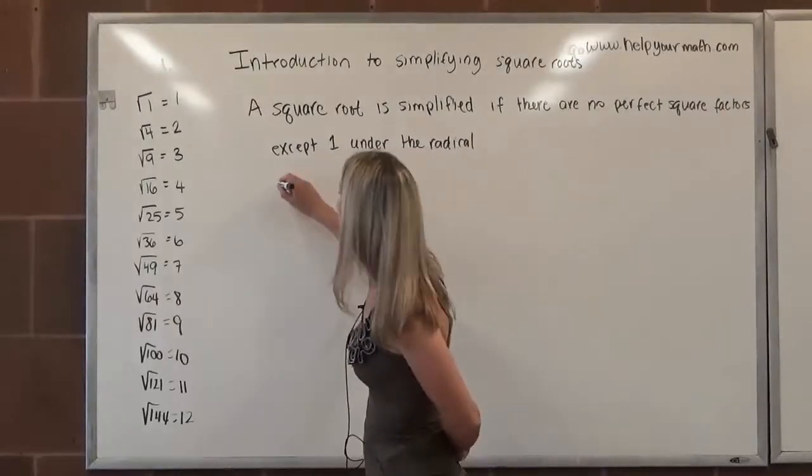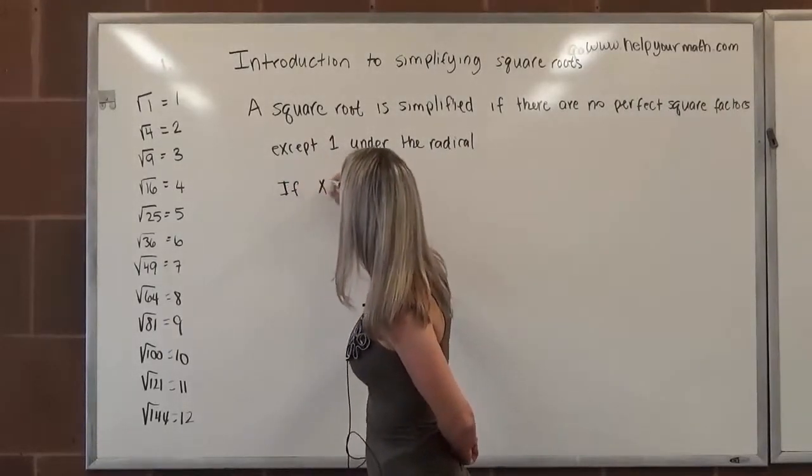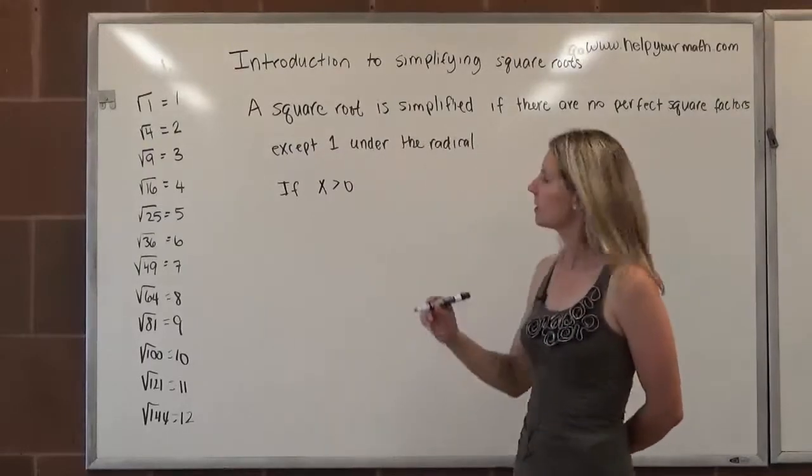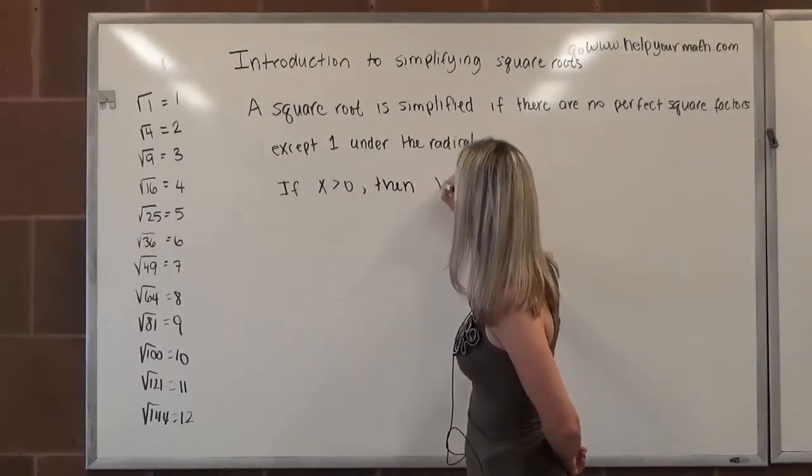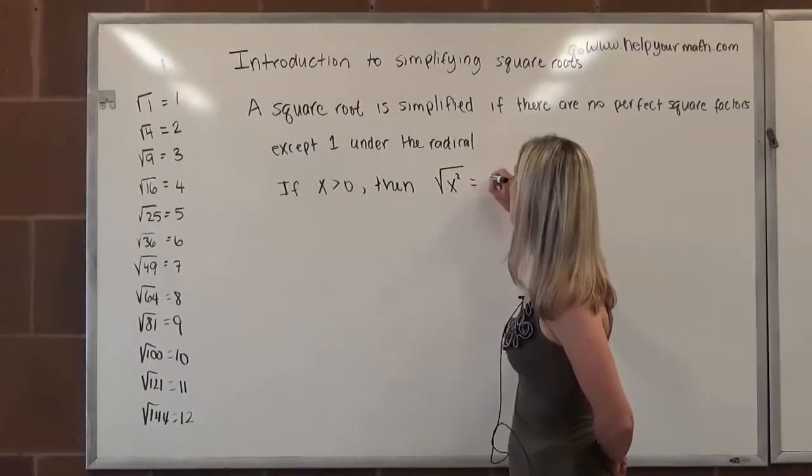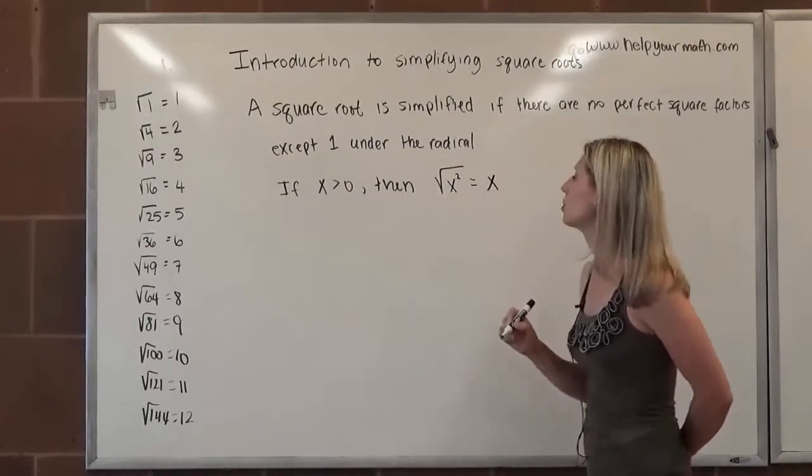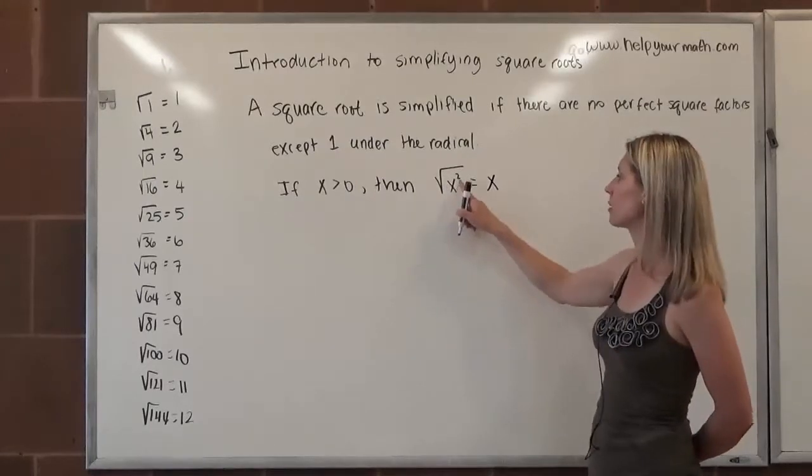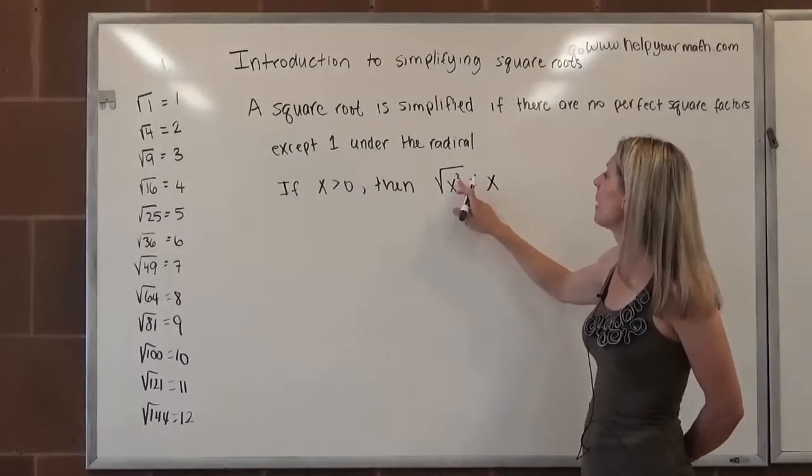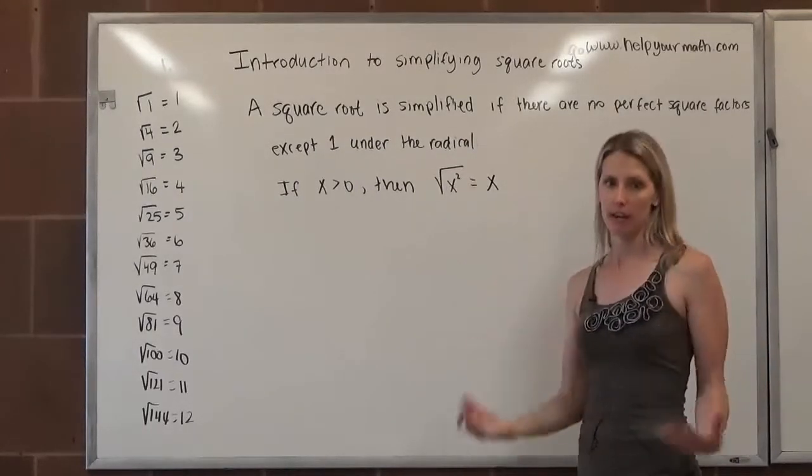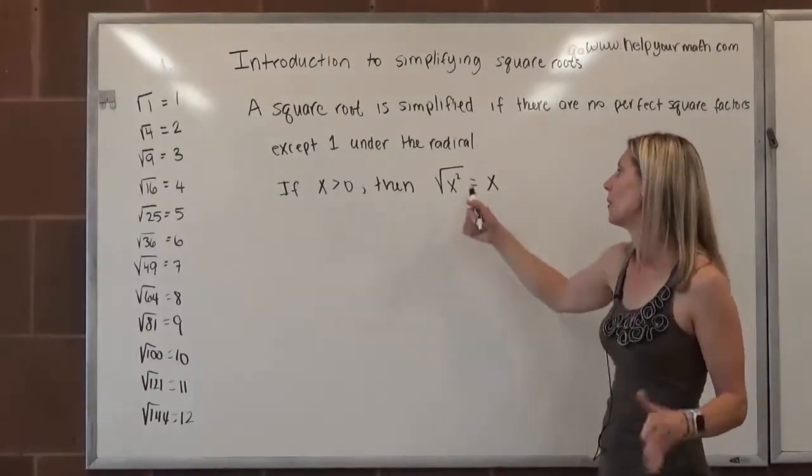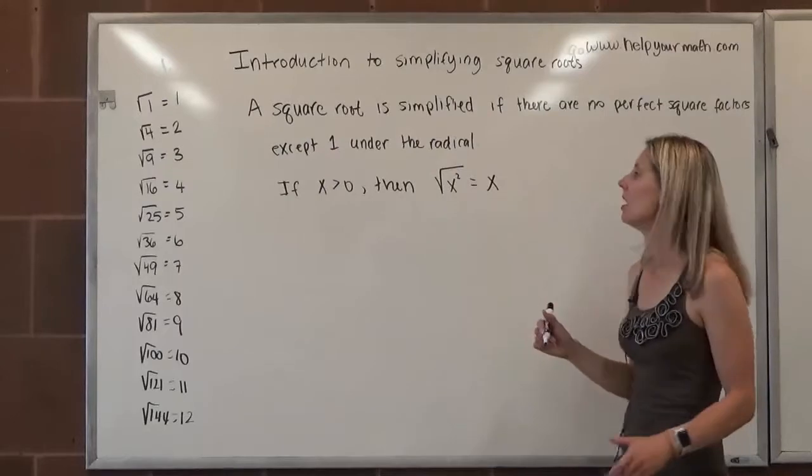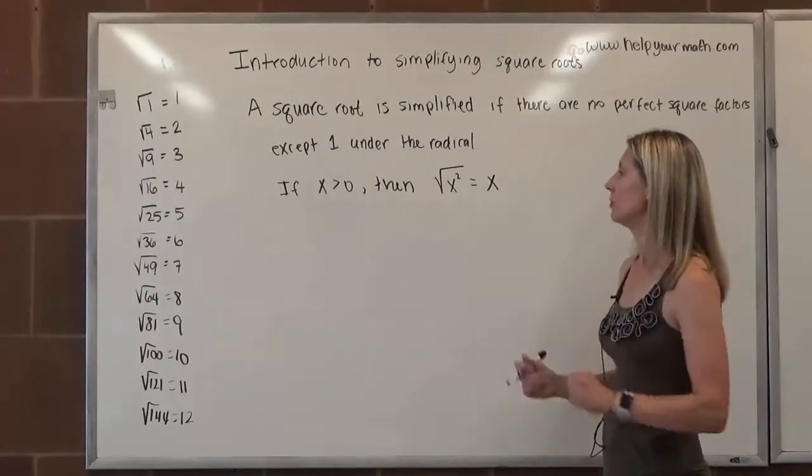So if x is positive, if x is greater than zero, then we can say the square root of x squared is equal to x. So what's nice there is that the square root of x squared is equal to x. The square and the square root, they are inverse operations and they cancel each other out when x is positive. So they undo each other.